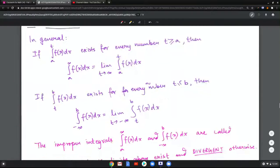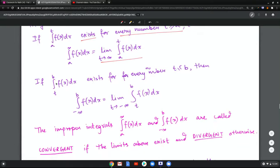Now in general, here are some rules. If a to t, f(x)dx exists for every number t more than a, then a to infinity f(x)dx can be solved as a to t and letting t go to infinity. Similarly, if t to b exists for every limit number less than b, then negative infinity to b, f(x)dx can be written as this particular limit.